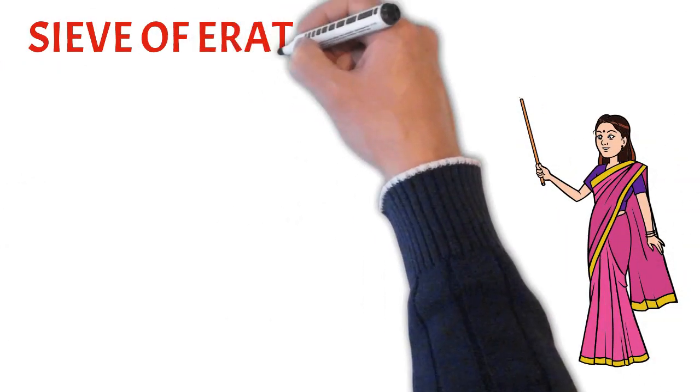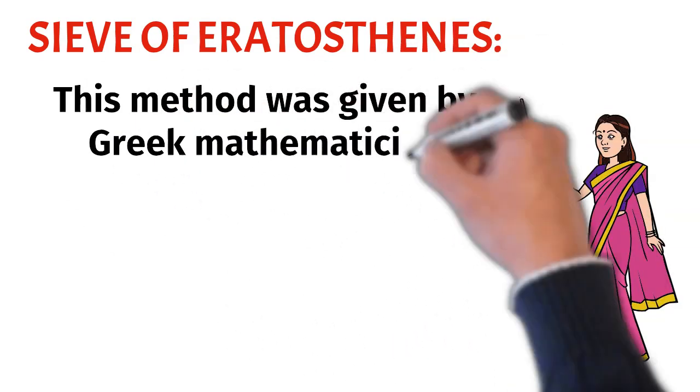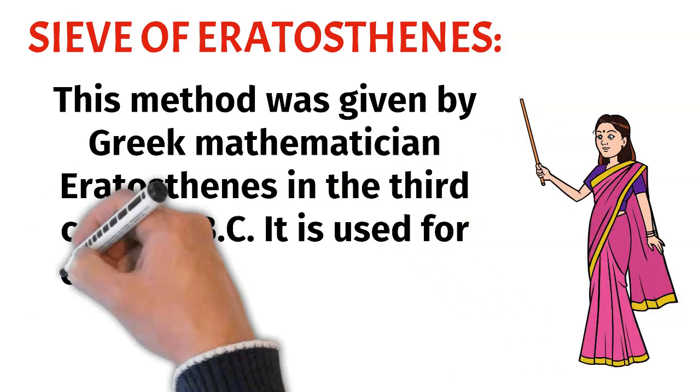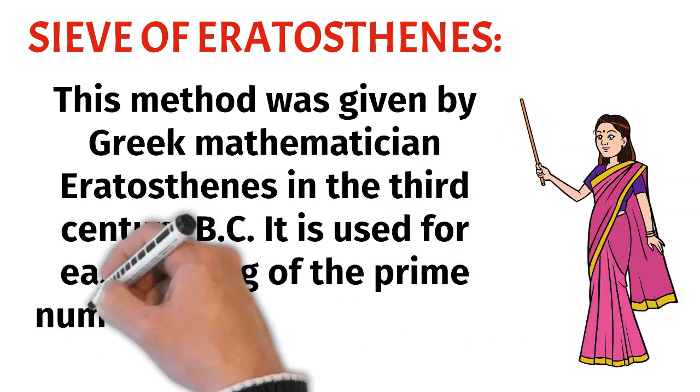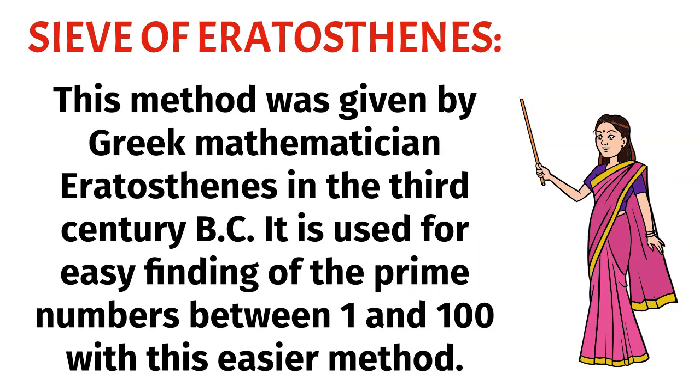Sieve of Eratosthenes. This method was given by Greek mathematician Eratosthenes in the 3rd century BC. It is used for easy finding of prime numbers between 1 to 100 with this easier method.